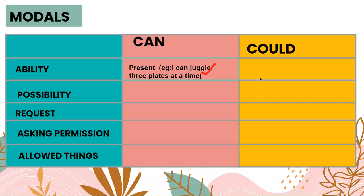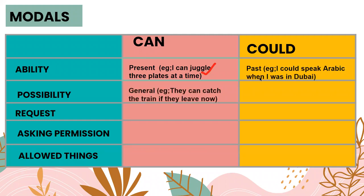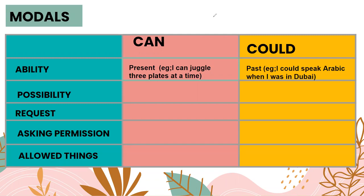Could is not a present tense — it is used as the past tense of can. For example, we can say: I could speak Arabic when I was in Dubai. So could here is used as a past tense of can, and we are talking about an ability which existed in the past but for some reason doesn't exist anymore.